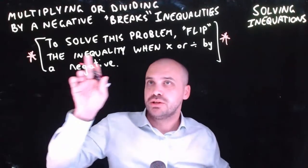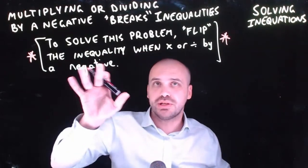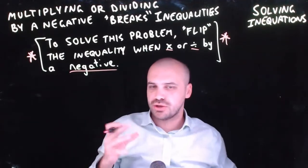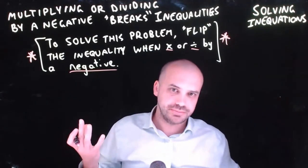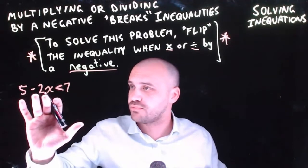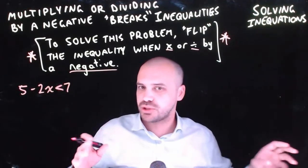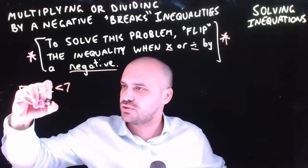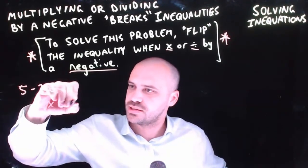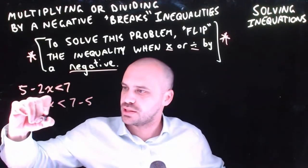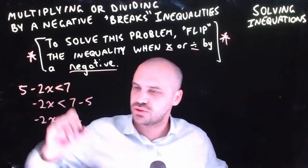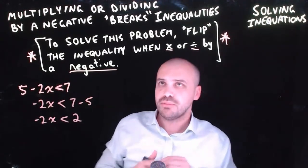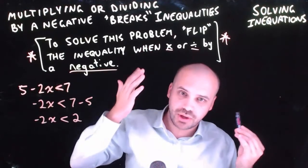The big important rule from this video: flip the inequality when multiplying or dividing by a negative. In practice, take 5 minus 2x is less than 7. The first step is to subtract 5 from both sides: negative 2x is less than 7 minus 5, which means negative 2x is less than 2. No weird steps needed here since we're not multiplying or dividing by a negative.